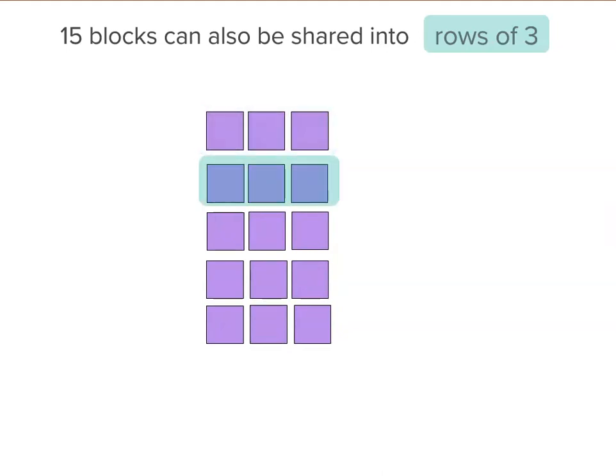I've actually got one, two, three, four, five rows of three. So if there are five rows of three, 15 shared into rows of three or divided by three equals five.